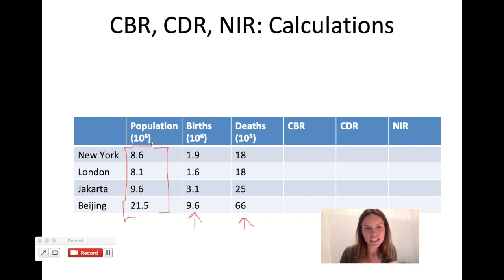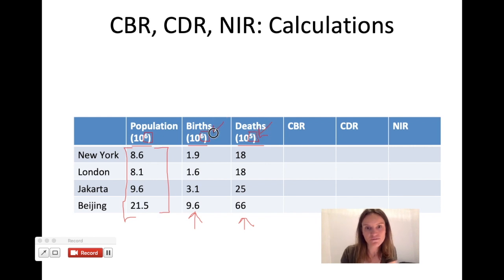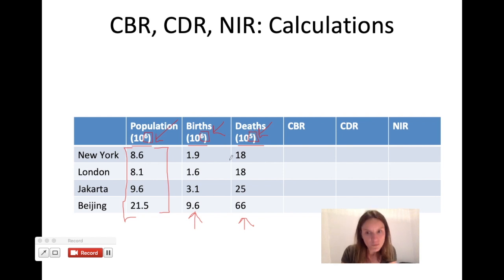If you look at these numbers it should be relatively obvious: the deaths are given per 100,000 people, the births are given per million people, and so is the overall population. You can't do ratio math and have it make sense if you're working with different exponential values. The first thing we need to do is normalize so that we're using the same exponent in all of these numbers.